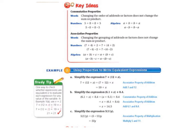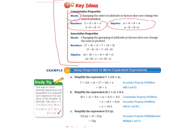Today we'll be starting on page 128 in your math textbook. We're going to start by copying the key ideas at the top of the page into your math notebook. The commutative property is when you change the order of addends or factors and that does not change the sum or the product. Copy the definition and the examples exactly as they appear here into your notebook. Then copy the definition for the associative property — that is when you change the grouping of addends or factors and that does not change the sum or the product. Be sure you copy all of this in the key idea box into your math notebook.